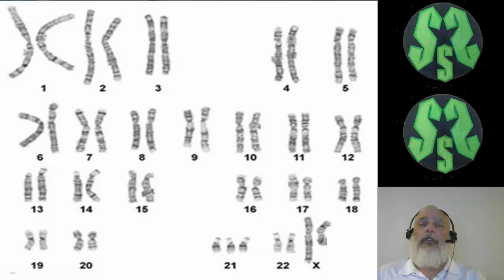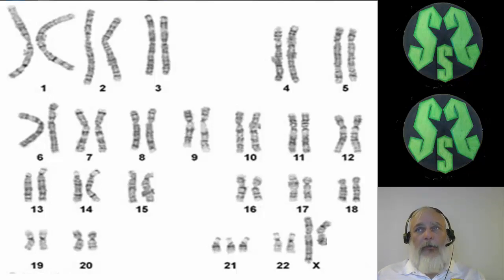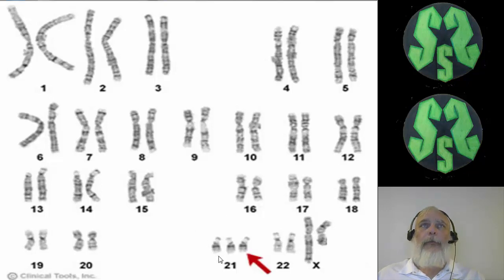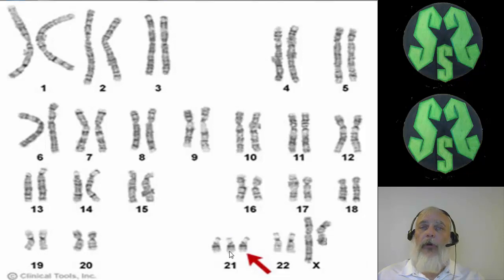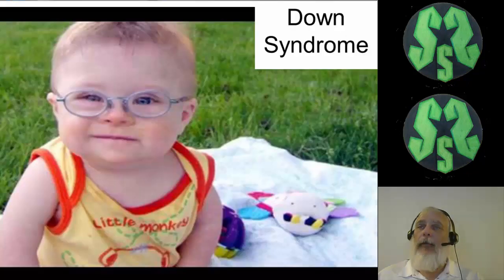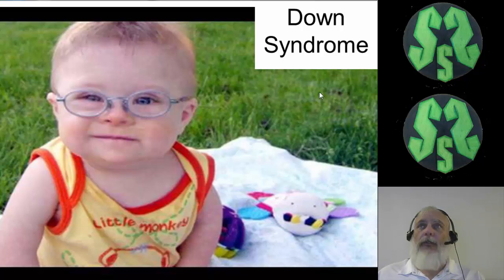If you look closely, you should be able to see something unusual. If you look at the 21st pair, you'll notice there are actually three chromosomes, and there's only supposed to be two. There's an extra chromosome, and every time the cells reproduce, it's going to copy this extra chromosome. This extra third chromosome in the 21st pair would cause what's known as Down syndrome.